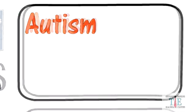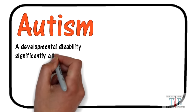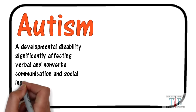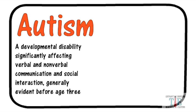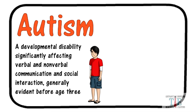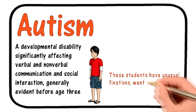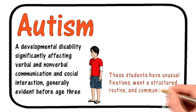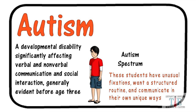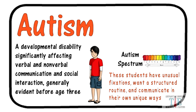Last on the board: autism. A developmental disability significantly affecting verbal and nonverbal communication and social interaction, generally evident before age 3. Teaching autistic students can be difficult because of the wide range of characteristics they possess. These students have unusual fixations and want structured routine and communicate in their own unique ways. Autism is sometimes called Autism Spectrum Disorder. For example, Asperger's is one of the high-functioning categories.